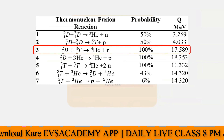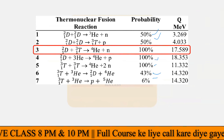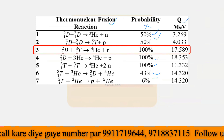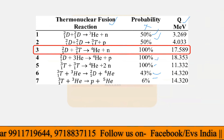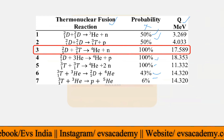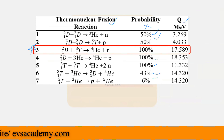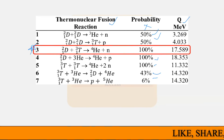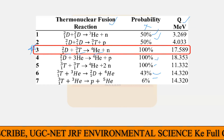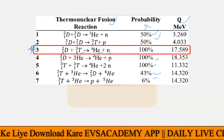These are the various fusion reactions, with their probabilities also provided. You do not need to remember the probabilities — only the fusion reactions and their emitted energy amounts matter. The most important fusion reaction is the third one: one deuterium combining with one tritium creates one helium atom and one neutron is released, with 17.589 megaelectron volts of energy released per reaction. This reaction takes place on the sun.